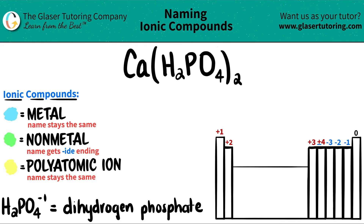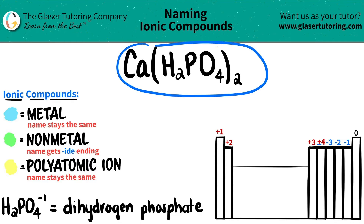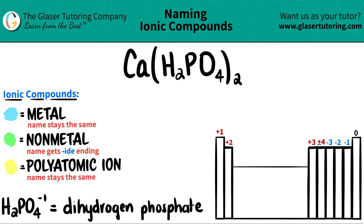Today, we are going to be naming the ionic compound CaH2PO42. A lot here, but we got this. There's a trick, guys. If you have an ionic compound that has three or more different elements, you know that you're dealing with at least one polyatomic ion.